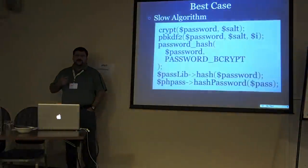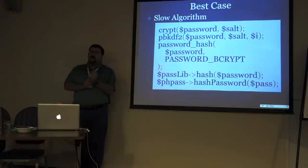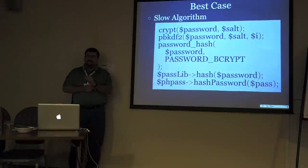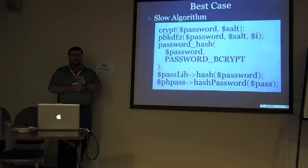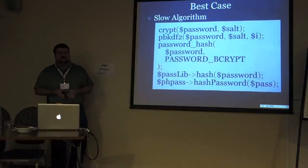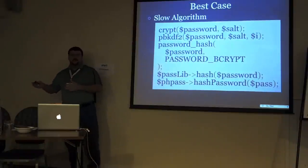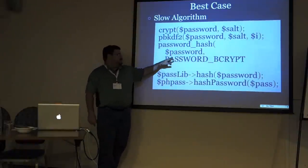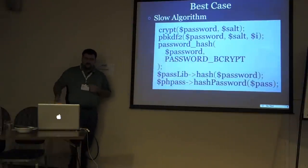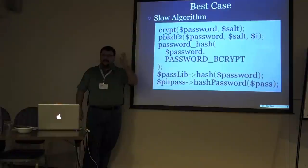The best case is to use a slow algorithm. PHP starting from 5.0 comes with Crypt, a C library that does Bcrypt among other algorithms — I highly recommend using Bcrypt. Another valid option is PBKDF2, which takes a primitive hash and iterates over it many times. It's NIST approved — the U.S. agency that approves algorithms for government use — and approved specifically for password storage. Starting in PHP 5.5 we introduced the new function password_hash, which you pass a password and tell it which algorithm to use. There are also libraries: Password Lib, which I maintain, and PHPS.